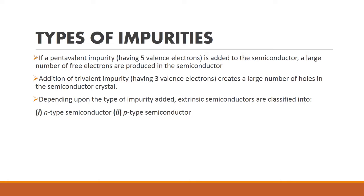Next, we are going to see what types of impurities can be added. Impurity is nothing but a material we add to a semiconductor. Two types of impurities can be added: one is pentavalent impurity and another is trivalent impurity. Penta means five, so a pentavalent impurity is an element having five valence electrons. Trivalent impurity means an element having three valence electrons. Already in a semiconductor we have four valence electrons, and we can increase its conductivity by adding a pentavalent or trivalent element.